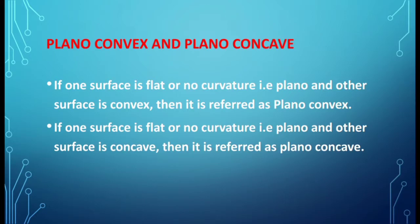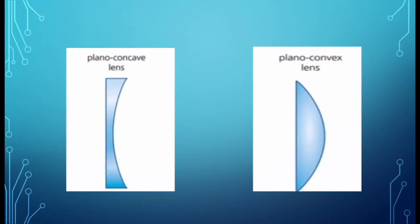Next, plano-convex and plano-concave lens. One surface is flat — it doesn't have any curvature and also doesn't have any power, that's why it is termed plano. In a plano-convex lens, one surface is plane and the other surface is convex. In a plano-concave lens, one surface is flat with no curvature or power, and the other surface is concave. Look at the image: in plano-concave, one surface is plane and the other is concave; in plano-convex, one surface is plane and the other is convex.